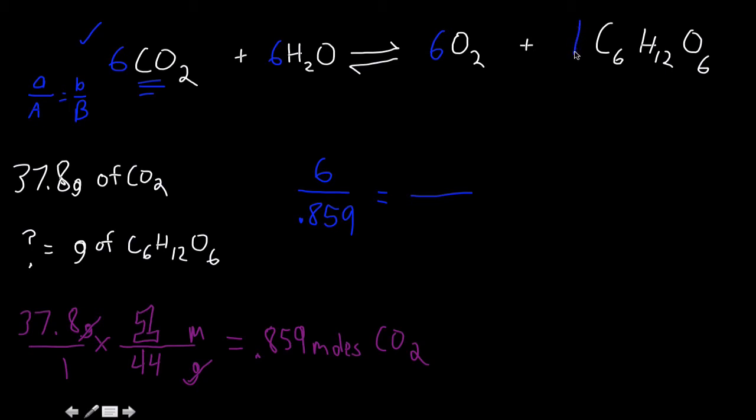What is my coefficient for C6H12O6? Well, that's just a 1, so I'm going to leave that as 1, and I want to know the amount of that that I can produce by that. So all I have to do in this context is flip this equation. So I'm going to grab it, and I'm going to flip it like that, and what that gives me is that gives me a question mark is equal to .859 divided by 6. So once I punch that into my calculator, what do I get?